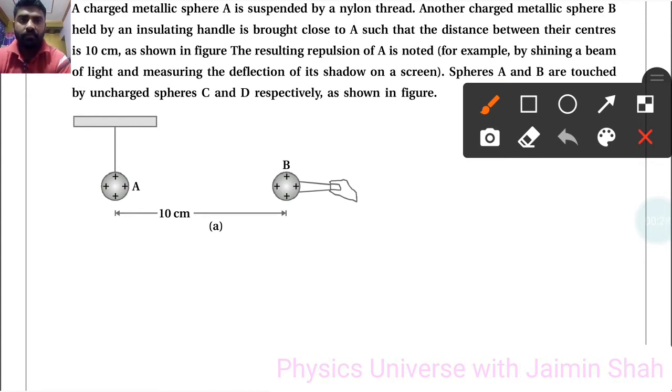The resulting repulsion of A is noted, for example by shining a beam of light and measuring the deflection of its shadow on a screen. Spheres A and B are touched by uncharged sphere C and D respectively as shown in figure. So here the resulting repulsion of A is noted.